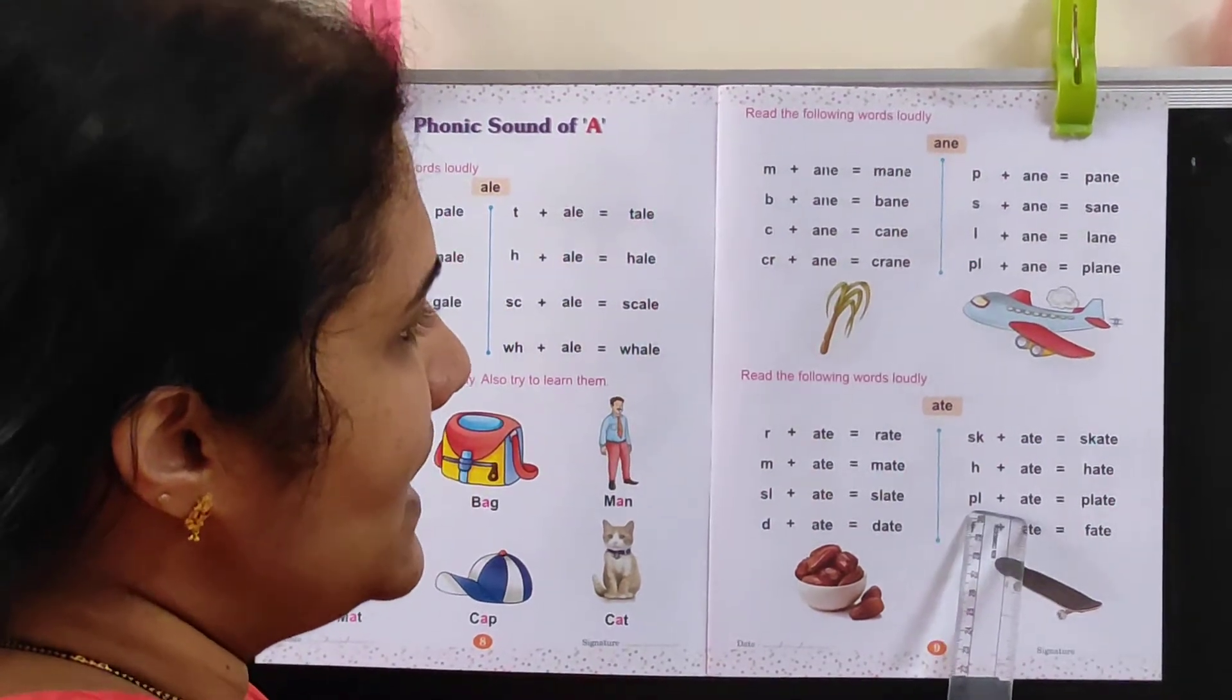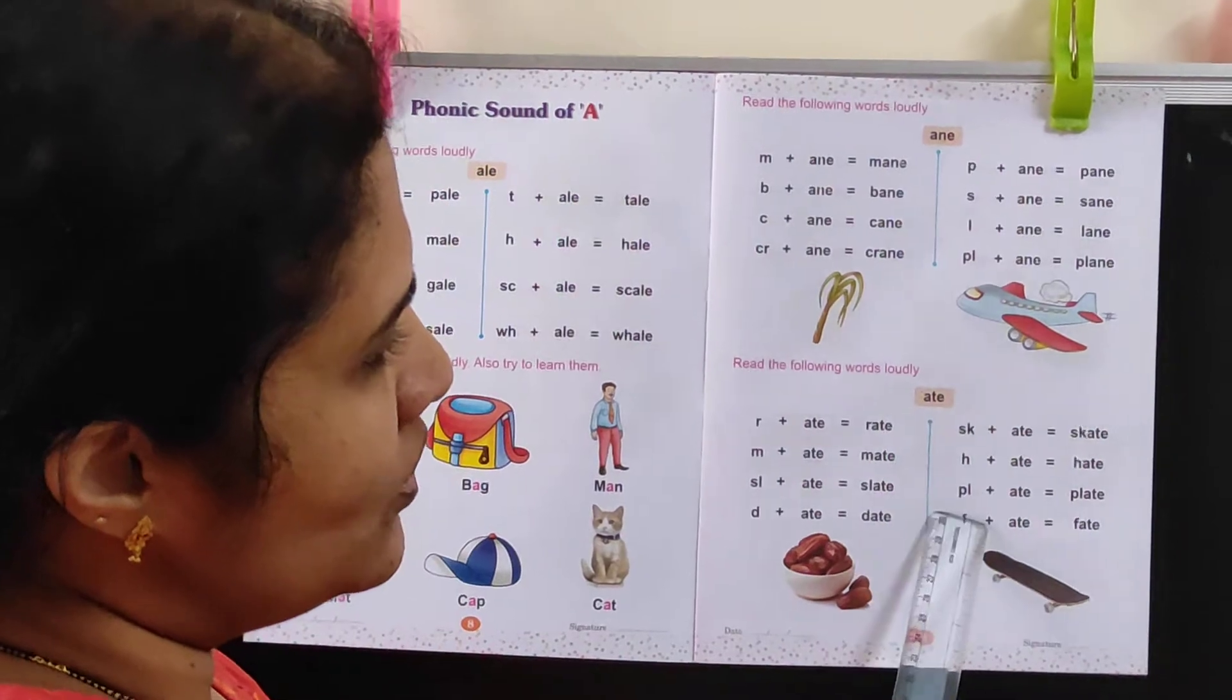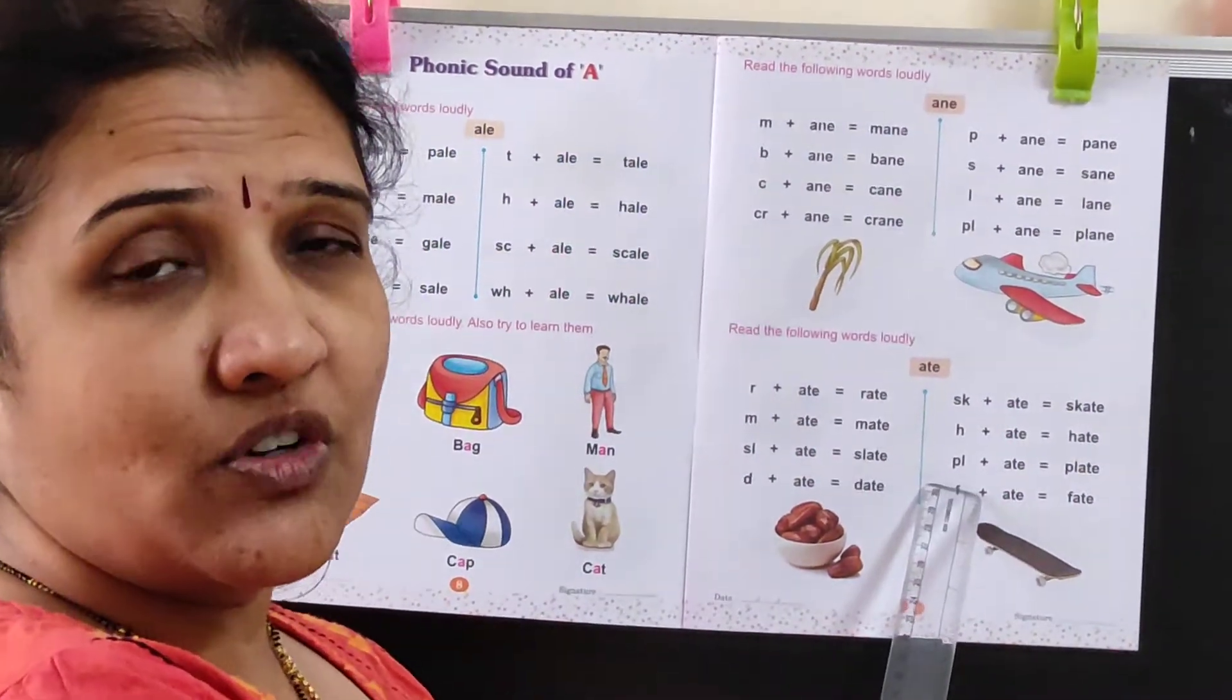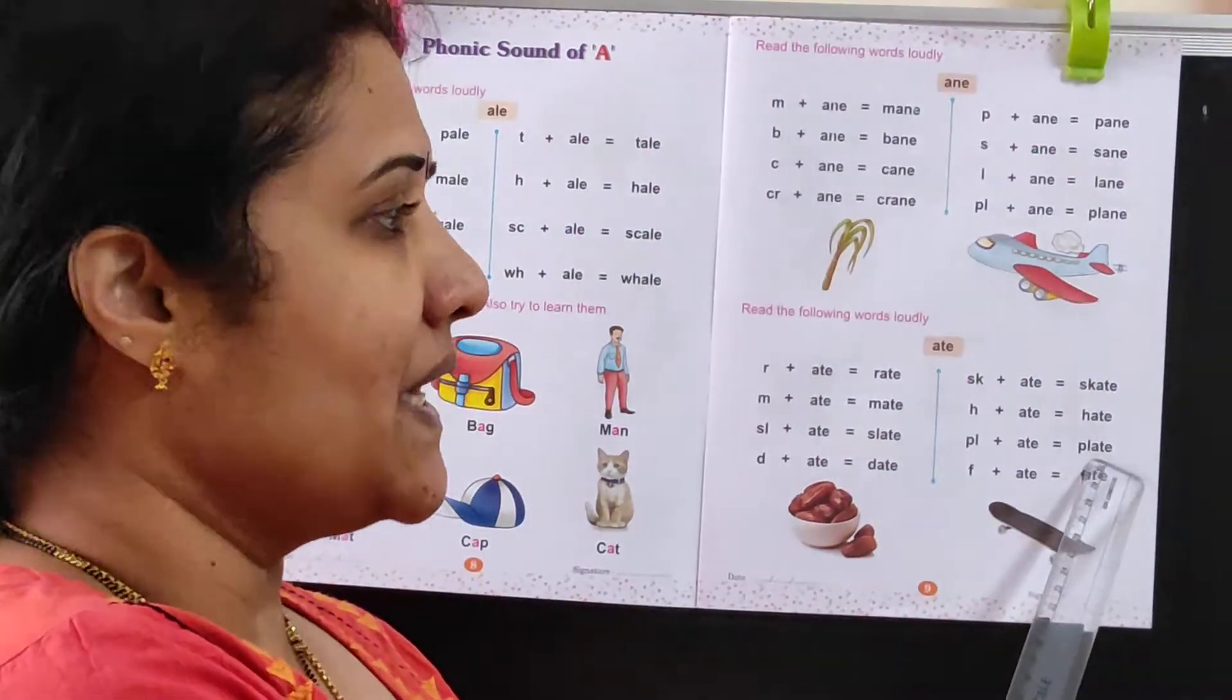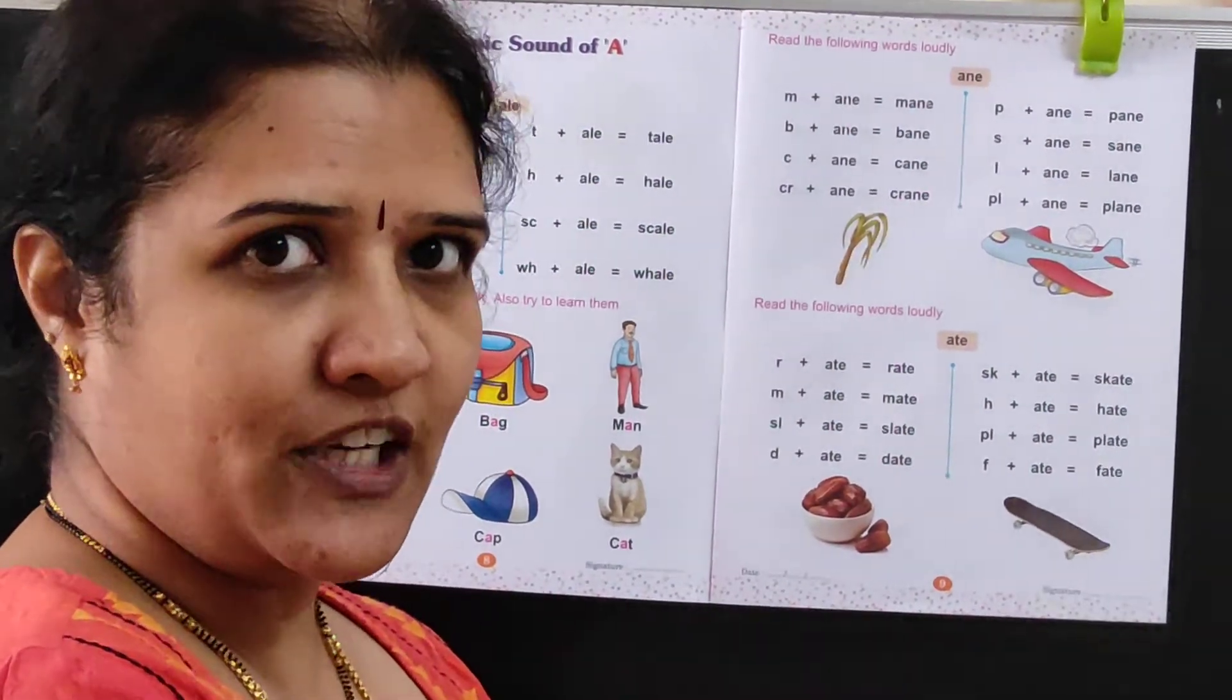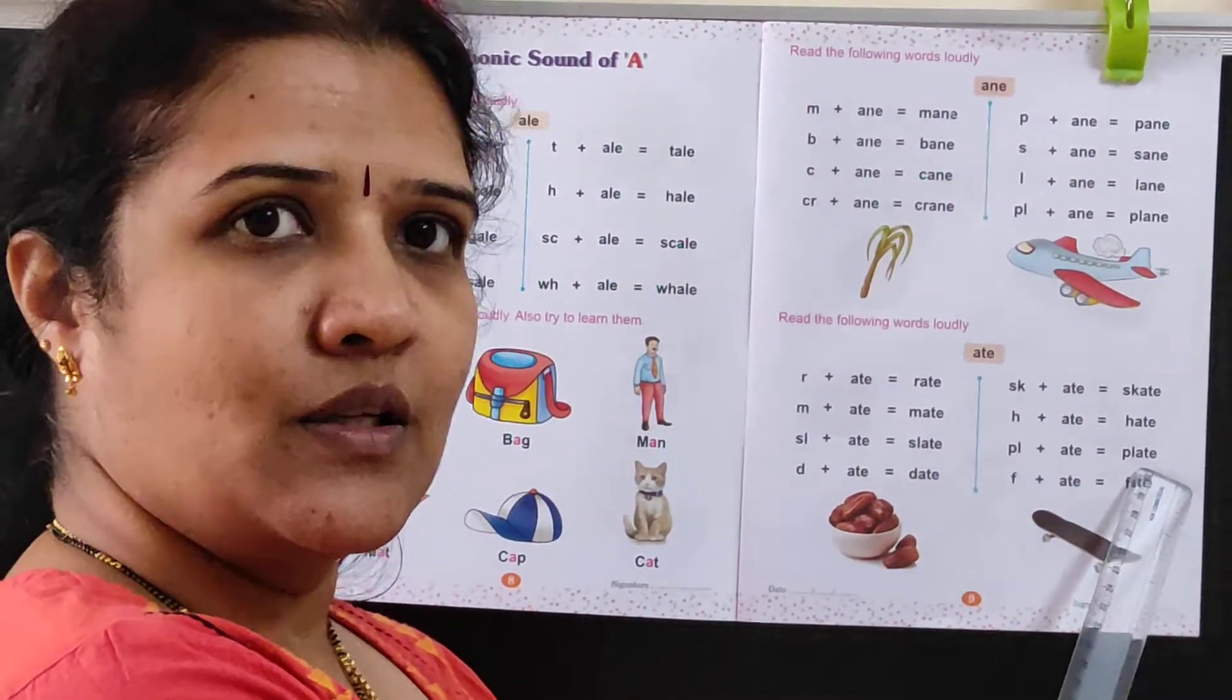Now again, P and L has come together. See, here also P and L are together. What is the sound of P and L? Plah. Plah and ate is Plate. You eat food in plate. P-L-A-T-E, Plate.